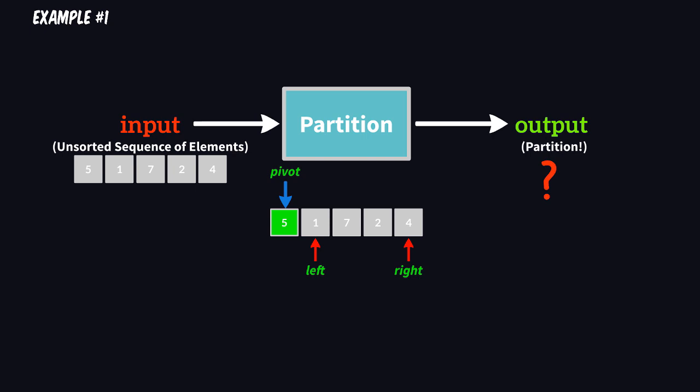The final step. The goal is very simple, we would like that the left cursor will point only to elements that are smaller than the pivot, which in our example is five, and that the right cursor will point only to elements greater than five.